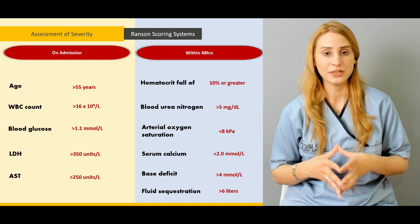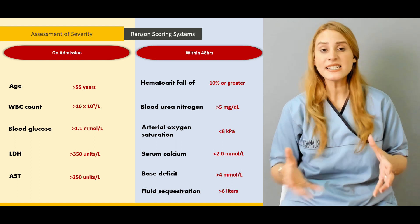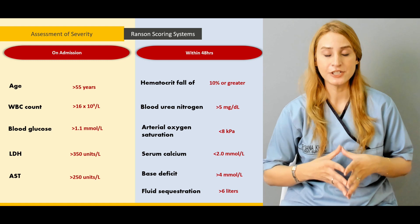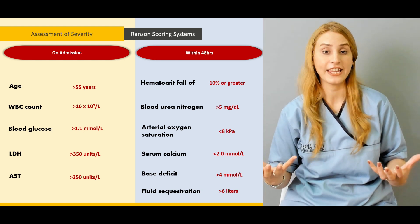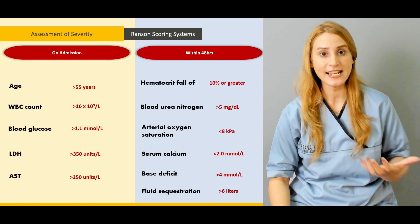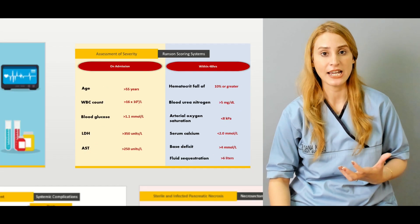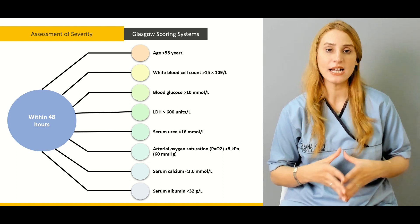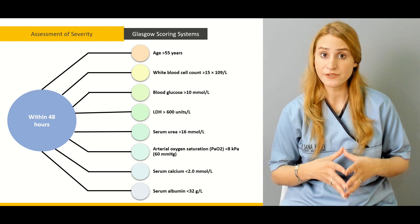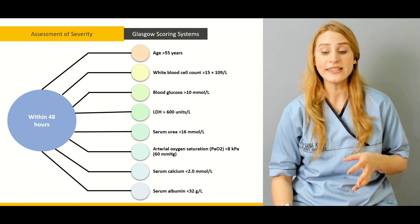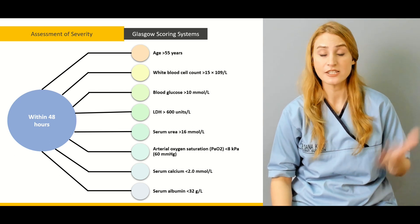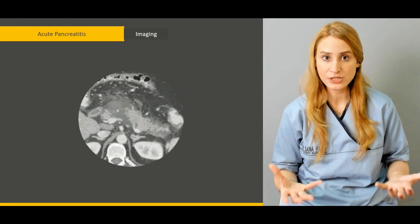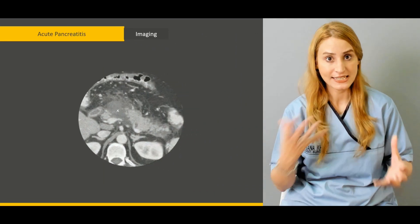If the patient is presenting to you with epigastric pain and vomiting, we'll be discussing the criteria for acute pancreatitis and what is the role of this criteria in the assessment of the severity of pancreatitis. We'll be talking about the Ranson criteria and the Glasgow scoring system, and why this scoring system is important to us.